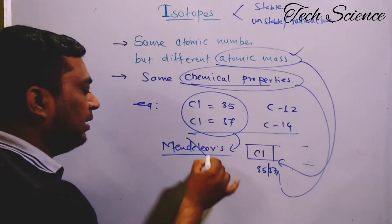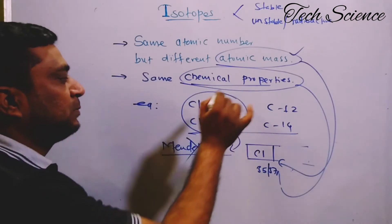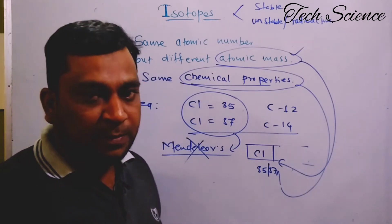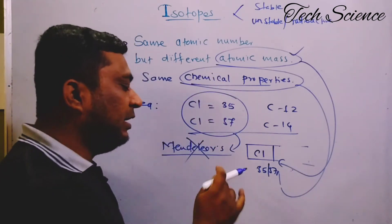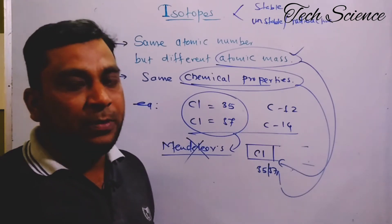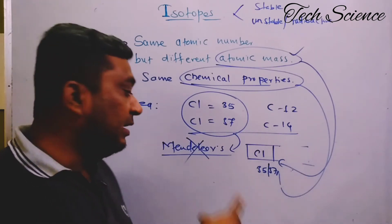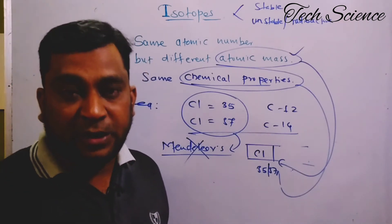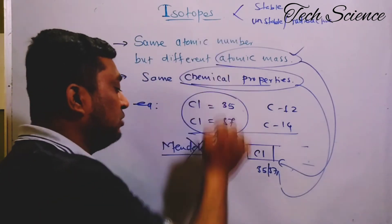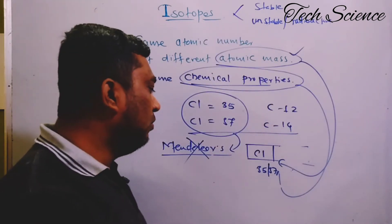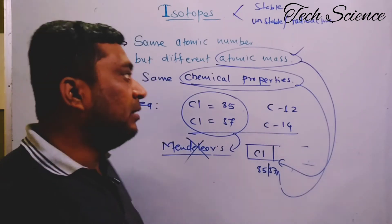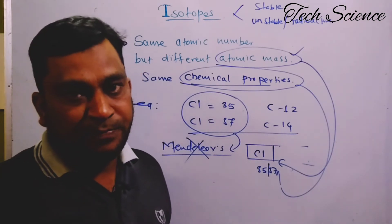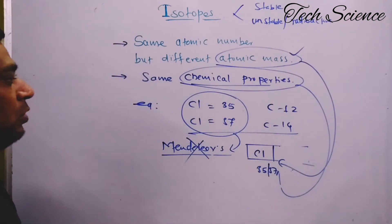Because of this conflict, Mendeleev's periodic table was unable to give a proper explanation. Based on the same chemical properties and different atomic masses, he could not place isotopes in the right position. This is one more significant drawback of Mendeleev's periodic table — in addition to the already discussed drawbacks regarding the position of hydrogen.